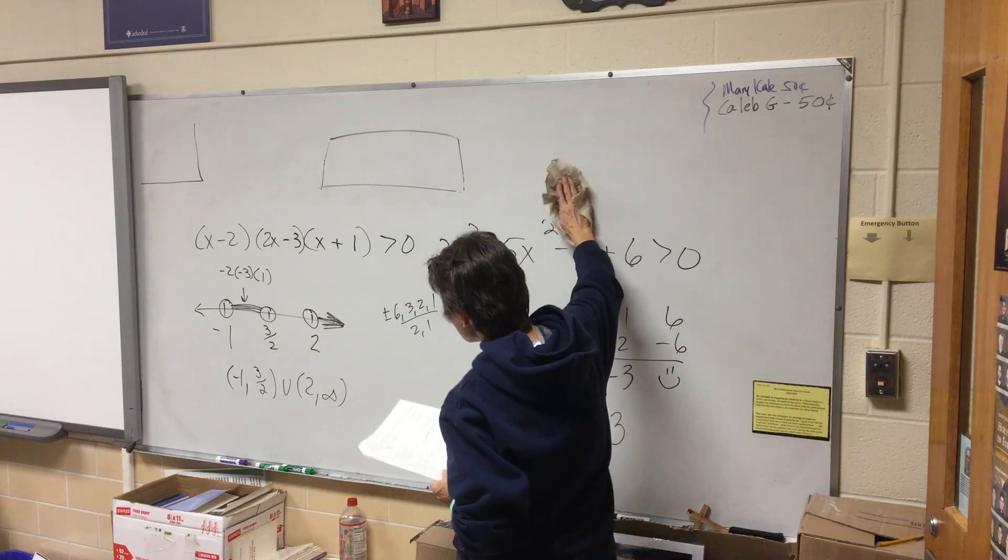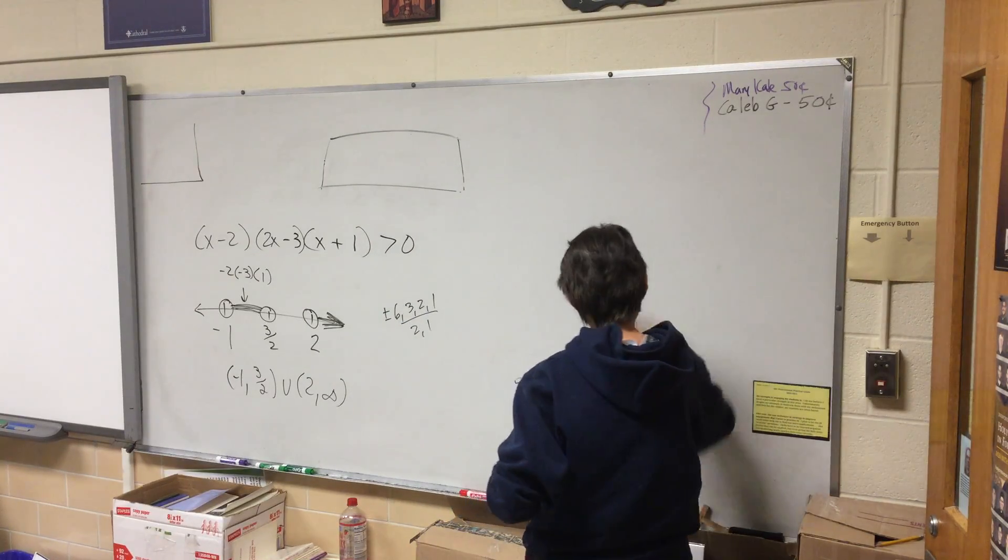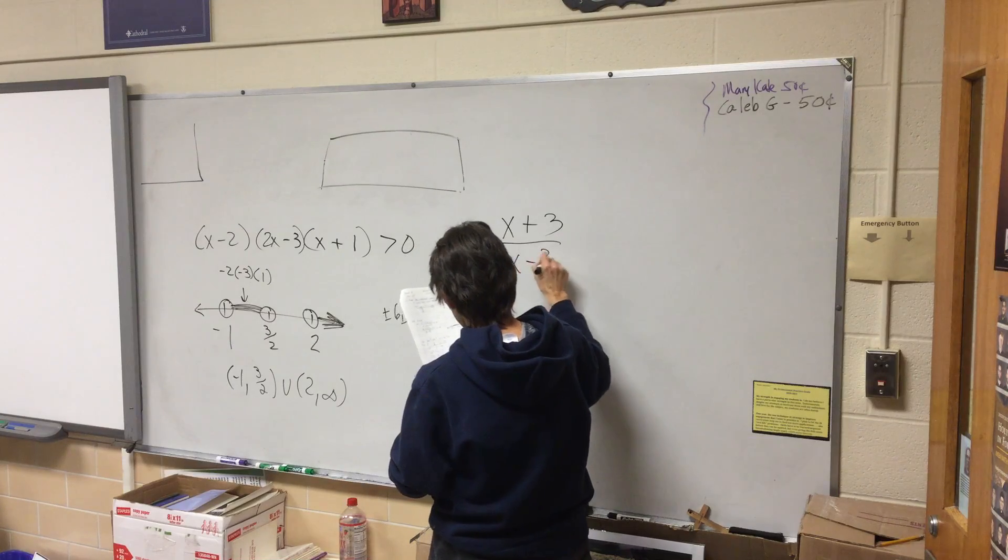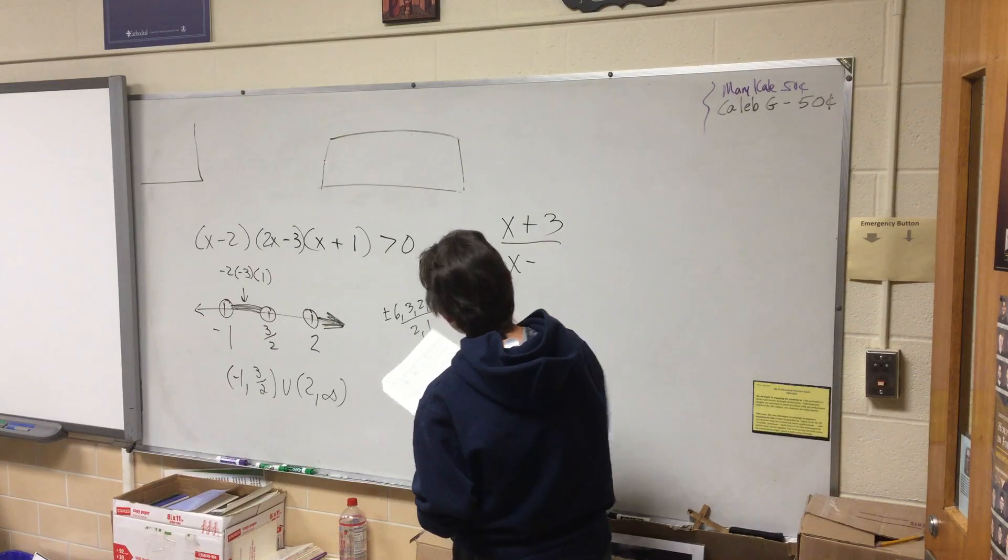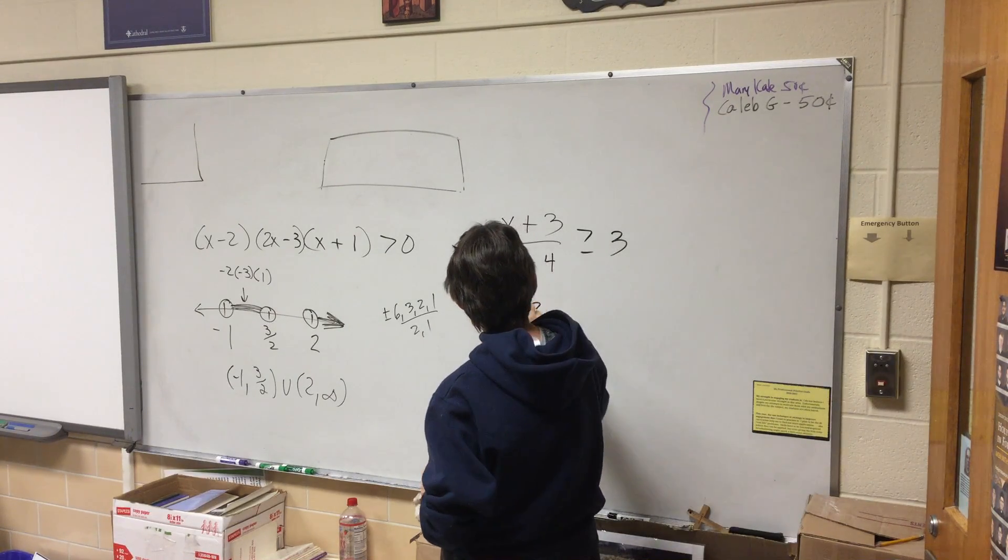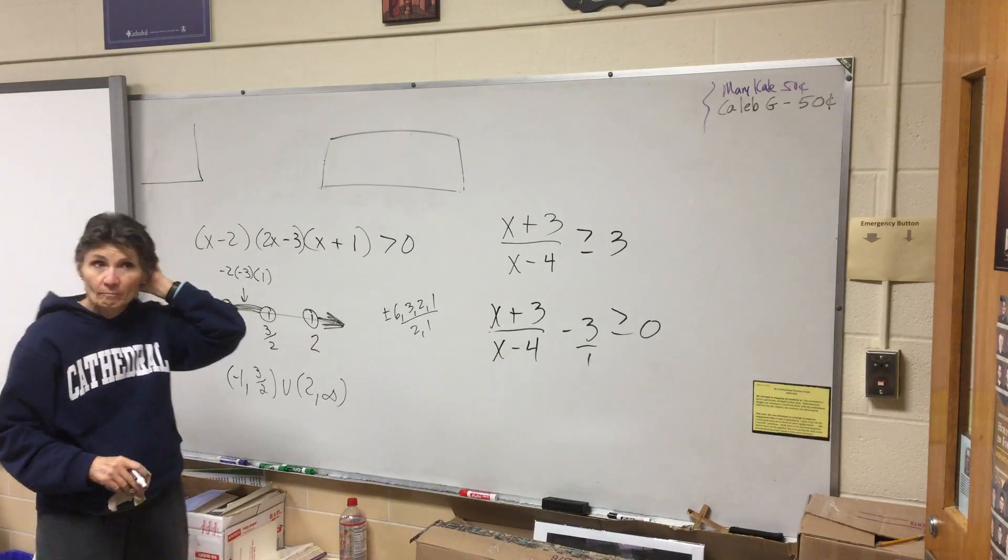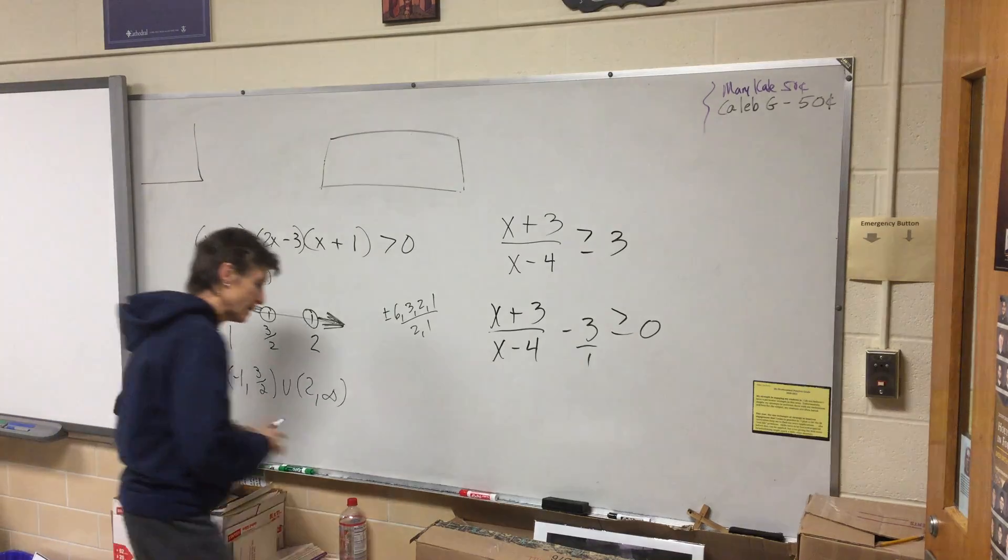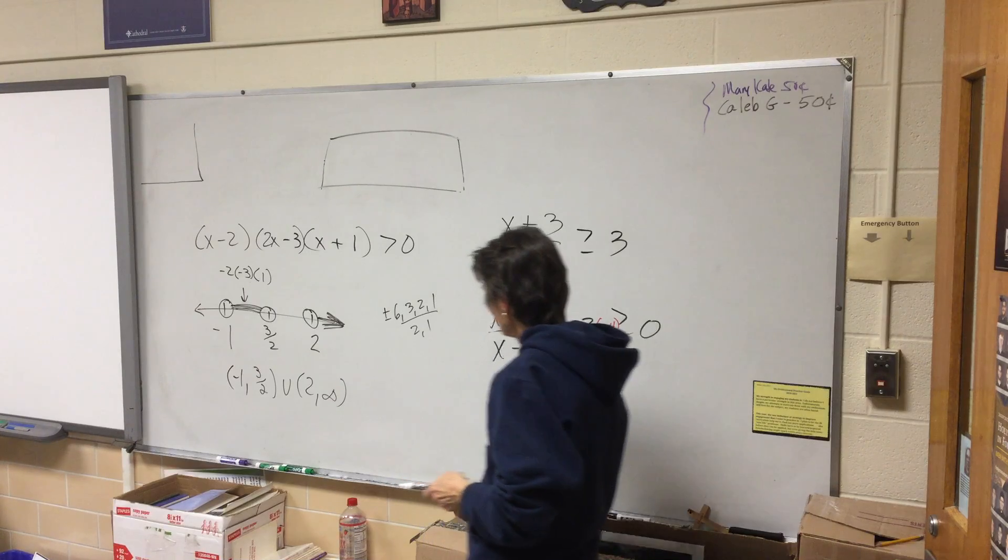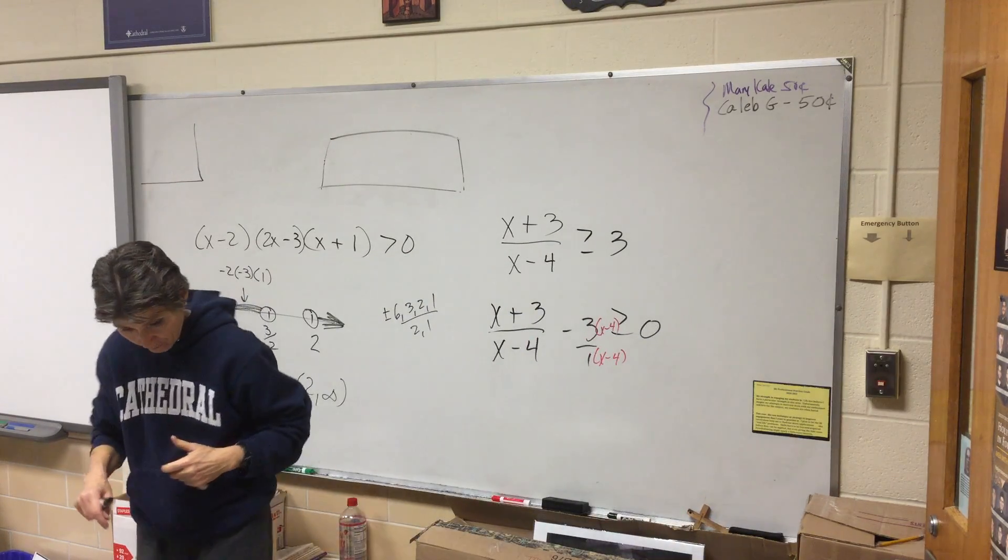For the last one, do we move the three over and then get a common denominator? Yes. It's an inequality, just like the one we just did. You've got to have a zero. We don't, so we'll move the three. Think of that as three over one, and then get a common denominator. I've got negative two x minus nine over x minus four.